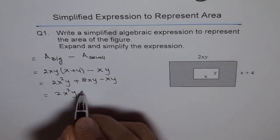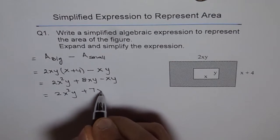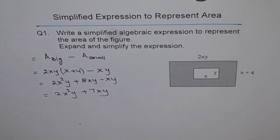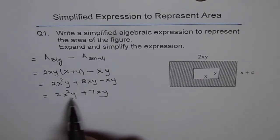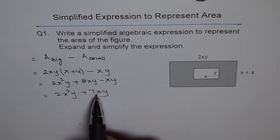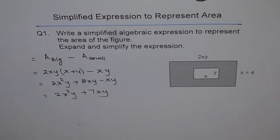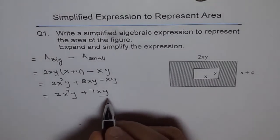So 2x²y + 7xy is the area of the shaded portion. If you're supposed to factor it, then you can also factor it. In factored form, we can take xy as a common factor and write this as xy(2x + 7).